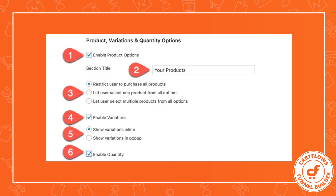Option two is where you name the section where your buyer can choose their quantity and variations — you'll see this on the front end shortly. Option three controls how your buyer can order: you can restrict them to purchase every product on the checkout page (since enabling quantities lets them set a quantity of zero), or you can let users select only one product using a radio button, or let users select multiple products shown as checkboxes.